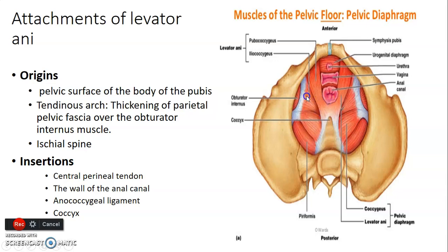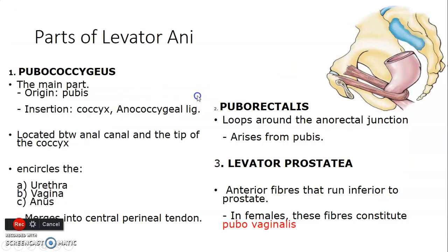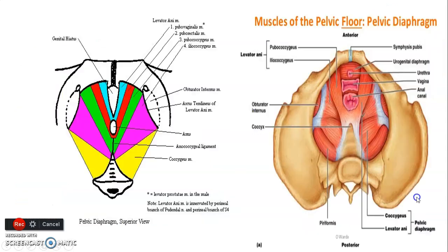Levator ani is made up of pubococcygeus and iliococcygeus muscles. It encircles the urethra, vagina, and the anus, and merges into the central perineal tendon. Puborectalis forms a sling between the rectum and the anus, while you have the levator prostatae in males, which forms the pubovaginalis in females.